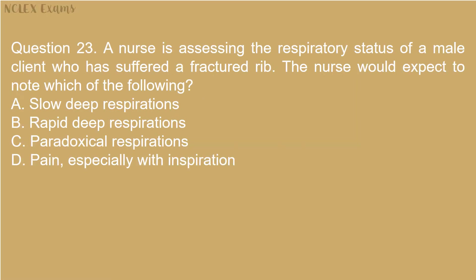Question 23: A nurse is assessing the respiratory status of a male client who has suffered a rib fracture. The nurse would expect to note which of the following? A) Slow, deep respirations, B) Rapid, deep respirations, C) Paradoxical respirations, D) Pain, especially with inspiration.